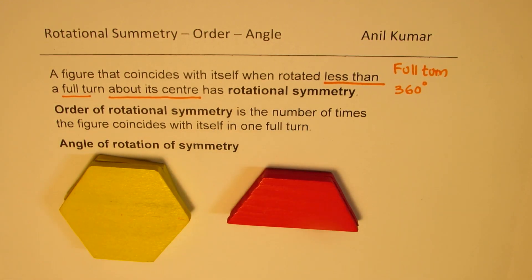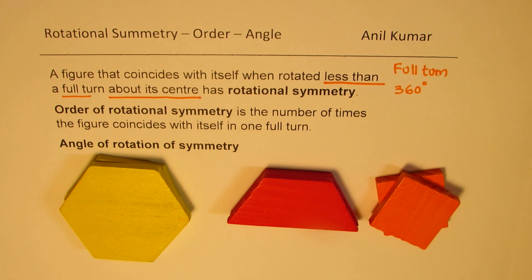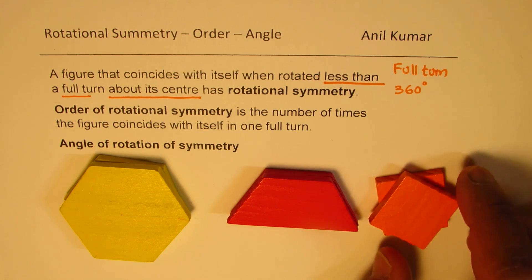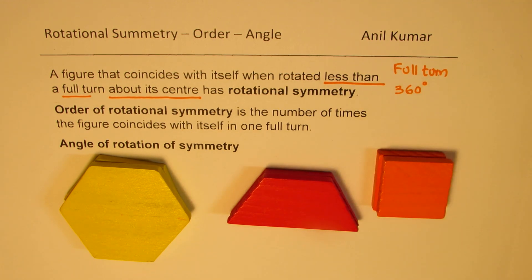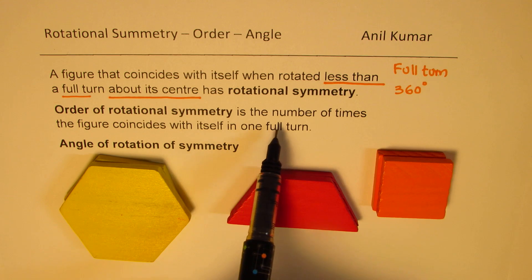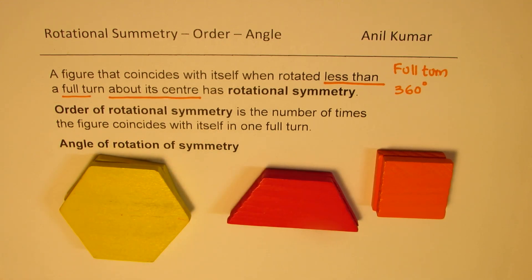I think we have understood what rotational symmetry is. Some figures will have it, some will not. For example, a square has rotational symmetry of 4, since there are 4 positions where it matches itself. Now, the order of rotational symmetry is the number of times the figure coincides with itself in one full rotation.